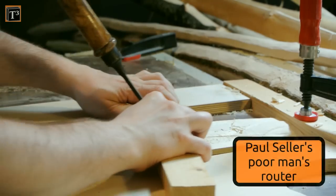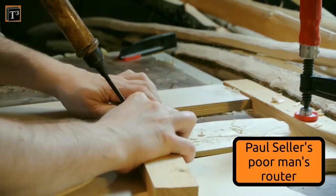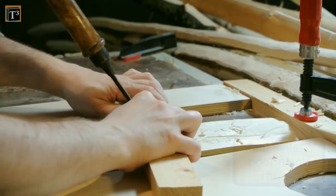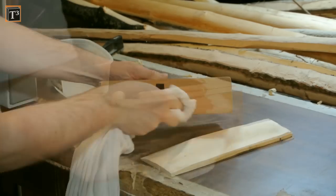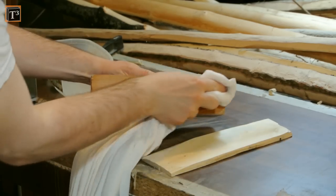The poor man's router like presented on Paul Sellers YouTube channel ensures I get a leveled board. Clean water with a bit of dishwashing soap helps me to clean the surfaces from oil.